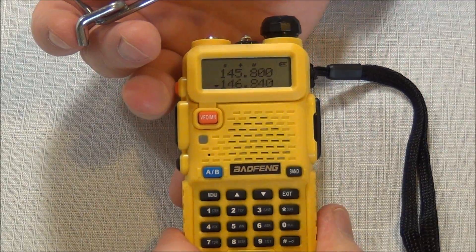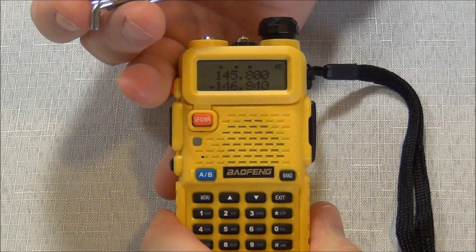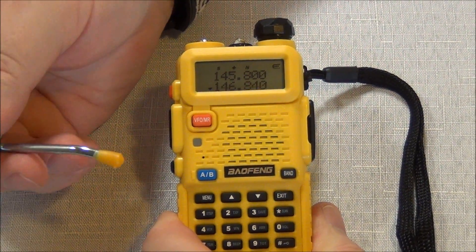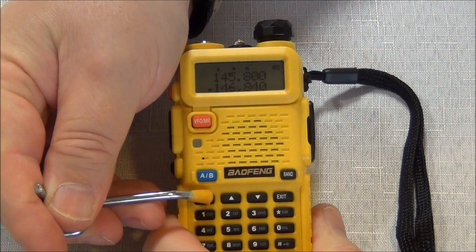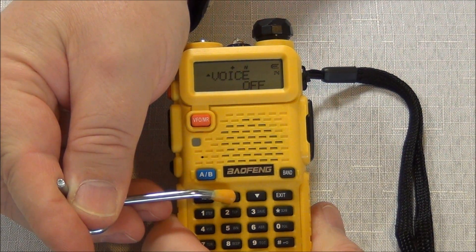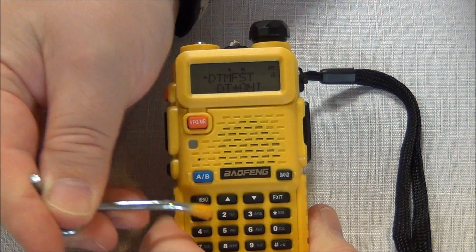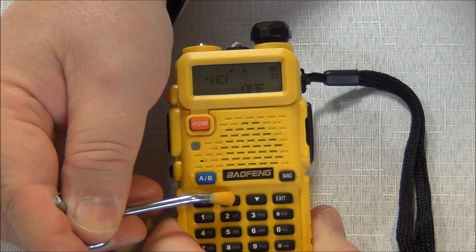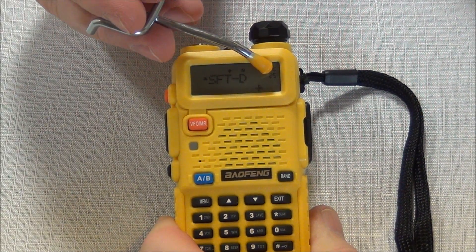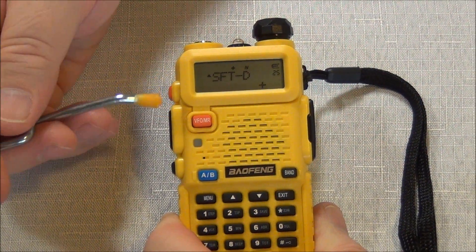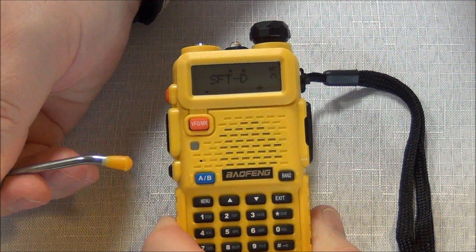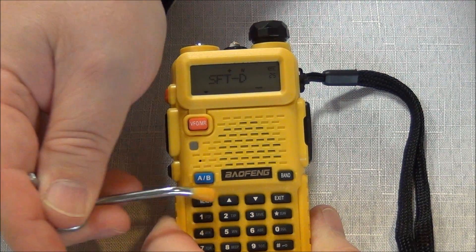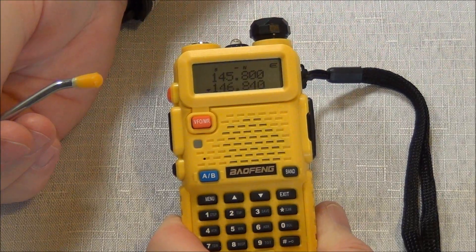Now the next thing we need to do is determine the shift, the direction of the transmit frequency in relation to the receive frequency. So this particular repeater is going to be a negative. So we select the menu and we go up. And the shift is option 25. Now you can just punch in 25, but I'm going to go ahead and just use the up key here until I see 25. That 25 is right here, and it says shift. Mine is a negative. So I'm going to hit menu, negative, menu, exit.